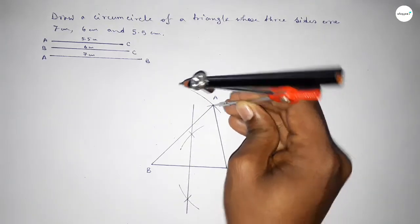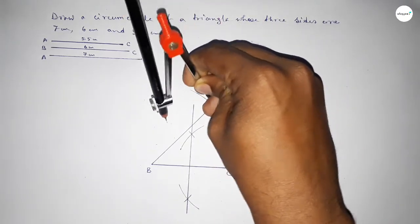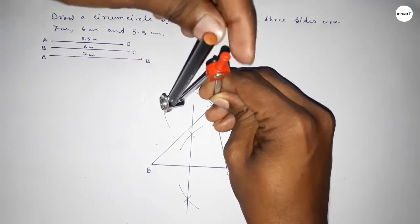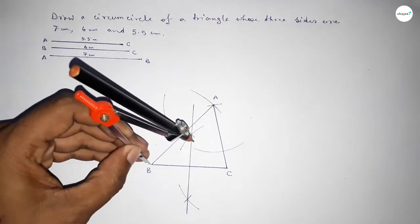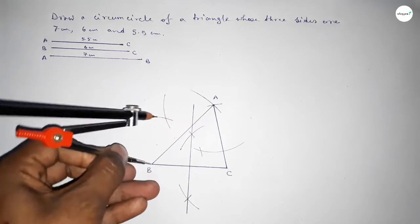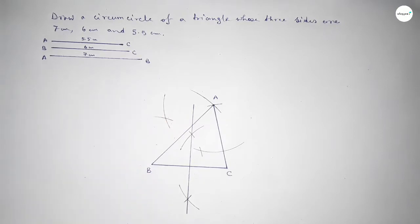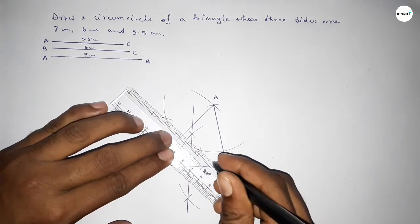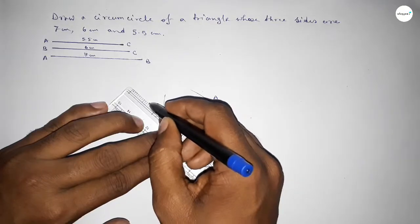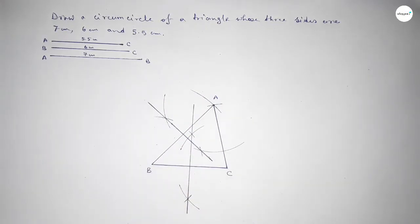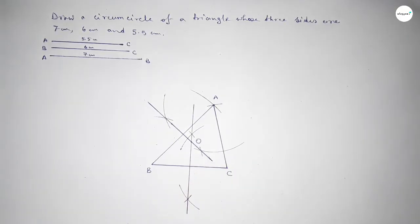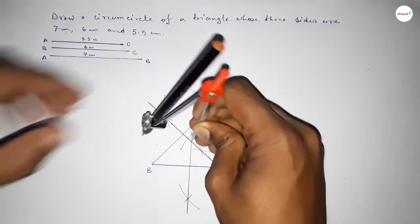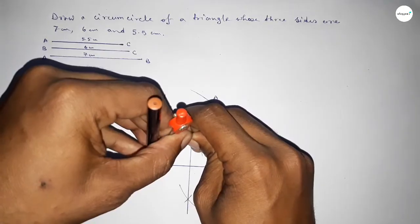Next we have to bisect the line AB. Taking greater than half of AB and drawing an arc, then with the same length putting the compass on the other end and cutting here. Now joining this bisector. Both bisectors intersect at a point — we take this as point O.